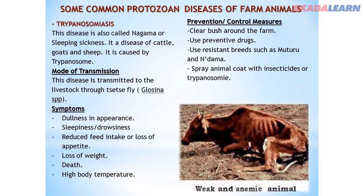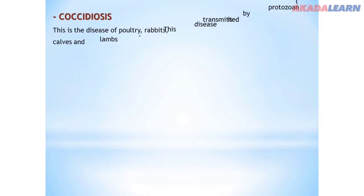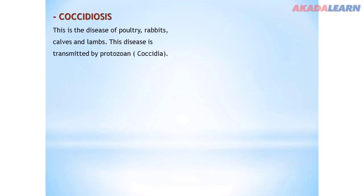Trypanosomiasis can be prevented or controlled by: clearing bush around the farm; using preventive drugs; using resistant breeds such as Muturu and N'Dama; spraying animal coats with insecticides; using trypanocidal drugs such as Trypamidium to prevent or cure the disease; and protecting animals from insect bites by screening their pens.